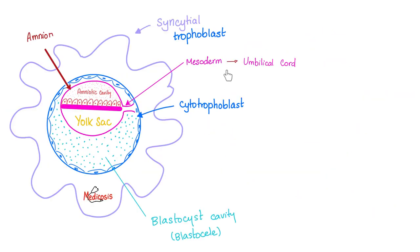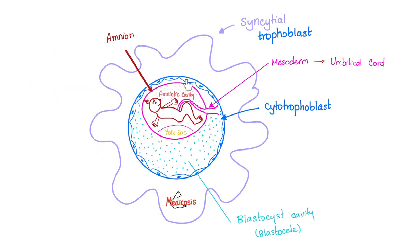From the mesoderm you will get the umbilical cord, which will connect mommy to the baby. Here is the amnion, here is the chorion. The baby is floating in the amniotic cavity, which has amniotic fluid — basically made of the baby's urine. Yes, when you were young you were floating in your own urine, even if you belonged to the royal family, so have some humility. You were floating in your own urine, swallowing your own urine and eating mucus.